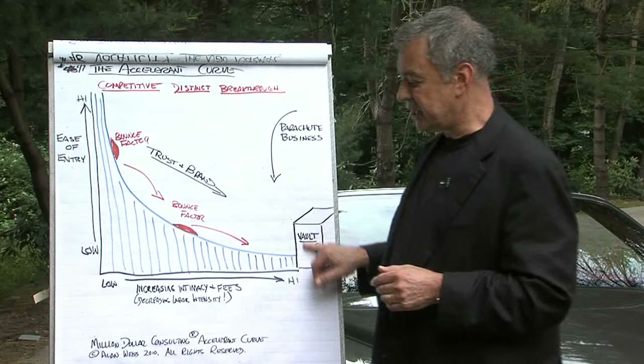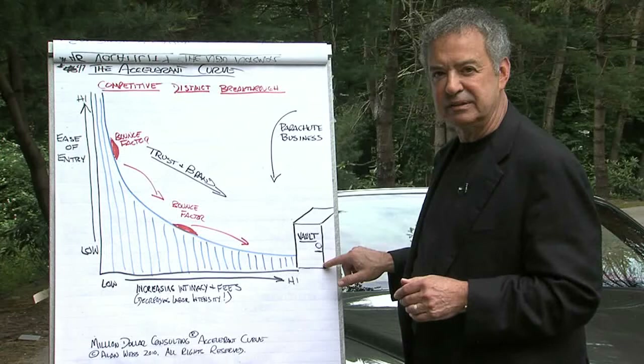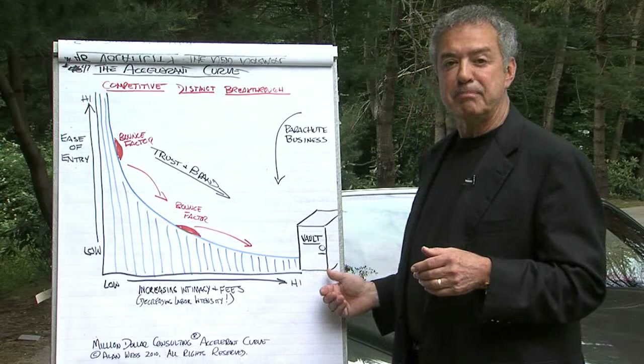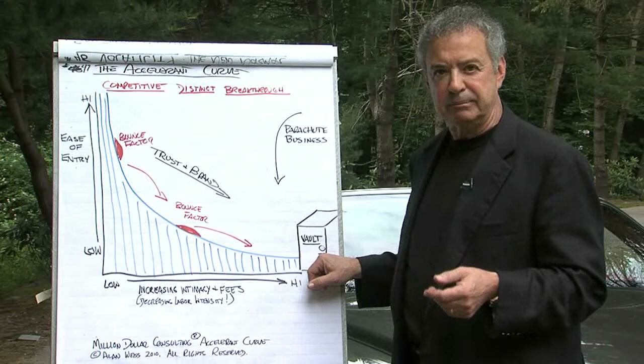At the end of the accelerant curve, we have a vault. I've termed this the vault because only you have the key — these are things which only you can do. In here is a retainer: a retainer relationship where the client only wants access to your particular smarts. I have a master mentor program, I have licensing programs — only I can provide them. They're in my vault. You can do the same thing.